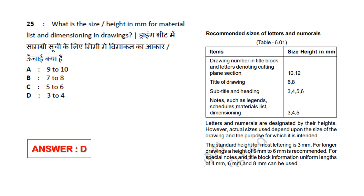The standard height for dimensions is 3mm. If you want to use special notes, title blocks, or uniform length, you use 4mm, 6mm, or 8mm. For the material list and dimensions, the answer is 3 to 4mm. So the answer is option D.